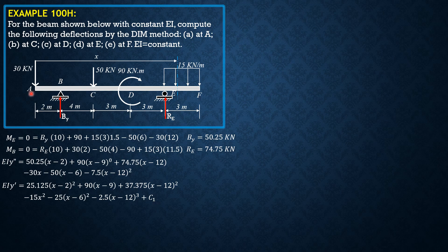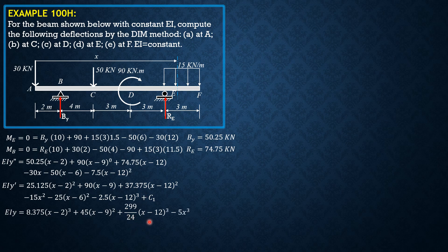C sub 2 is delta A. Integrating again: EI Y equals 8.375(X minus 2) cubed plus 45(X minus 9) squared plus (299/24)(X minus 12) cubed minus 5X cubed minus (25/3)(X minus 6) cubed minus (5/8)(X minus 12)^4 plus C sub 1 times X plus C sub 2.